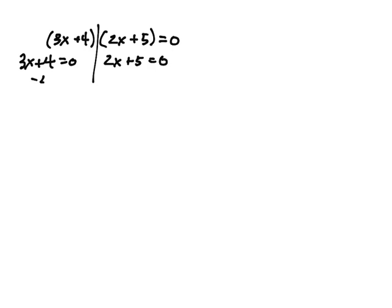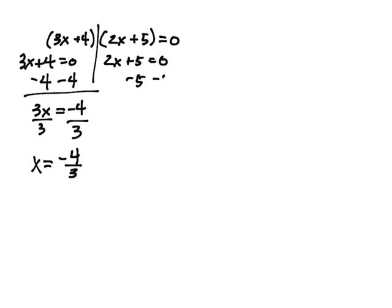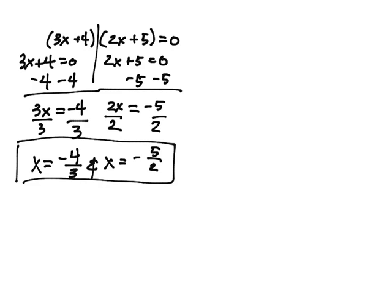So we have 3x plus 4 and then 2x plus 5 equals 0. Let's go ahead and split that. So we have 3x plus 4 equals 0, and then 2x plus 5 equals 0. Subtract both sides by 4, and then we have 3x equals negative 4. Let's go ahead and divide both sides by 3. x equals negative 4 thirds. I'm going to subtract both sides by 5 on this one. So we have 2x equals negative 5. Divide both sides by 2, and x equals negative 5 halves. And guys, this is an and. And that's my final answer.